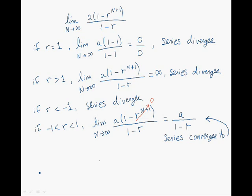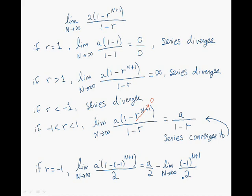There's one more case to look at: when R is equal to minus 1. When N is even, even plus 1 gives an odd number, so we have minus 1 to the power of an odd number, which gives minus 1 over 2. When N is an odd number, odd plus 1 gives even, and we get 1 over 2. The limit oscillates between minus 1 over 2 and 1 over 2, so it does not converge to a single value and diverges. The series therefore diverges.